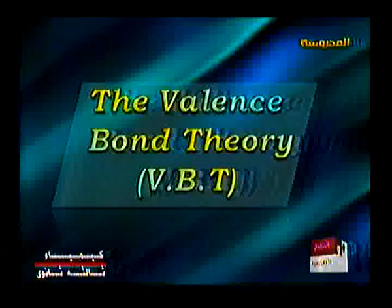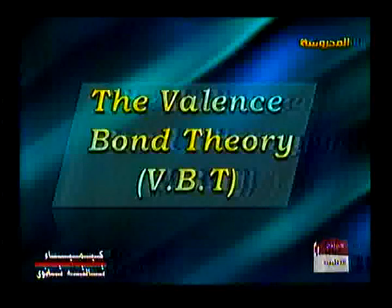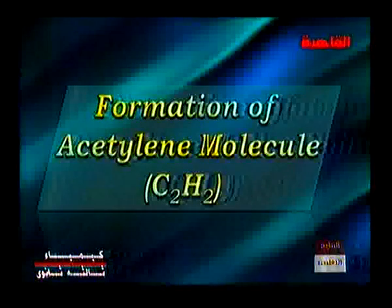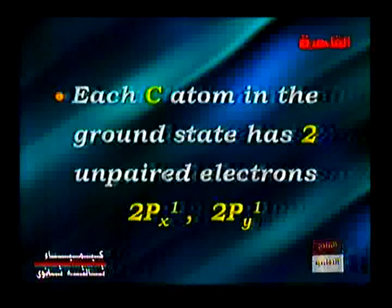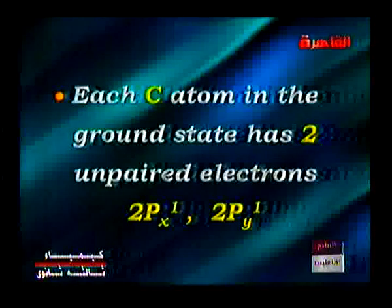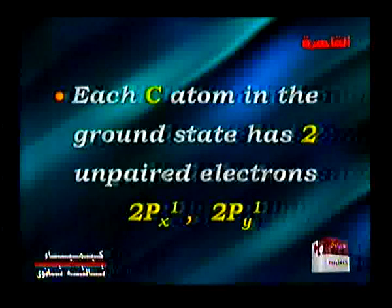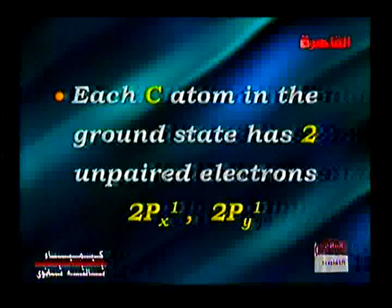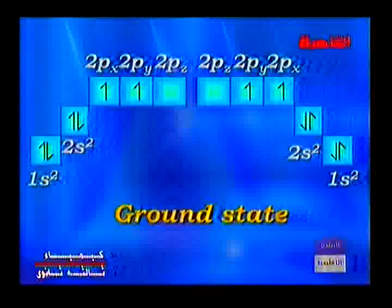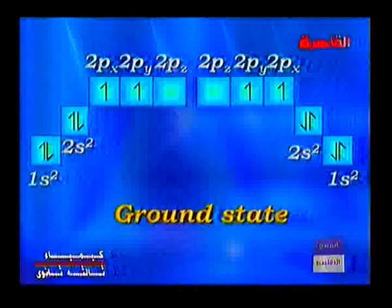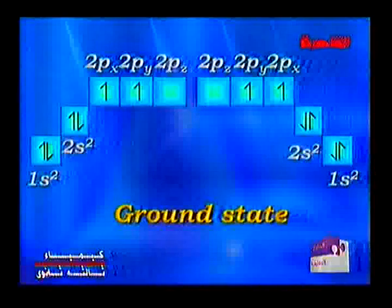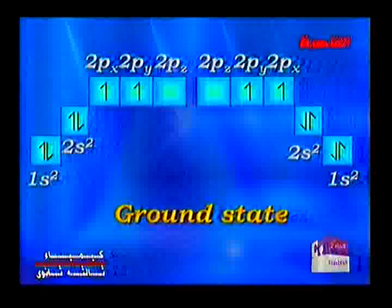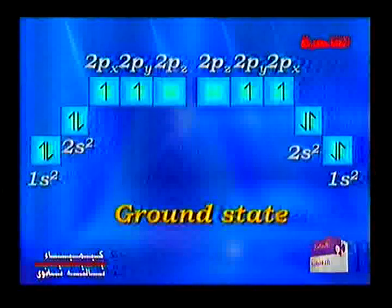The valence bond theory: the formation of acetylene molecule C2H2. Each carbon atom in the ground state has two unpaired electrons, which are 2px1 and 2py1. As the screen shows now, the carbon atoms in the ground state have electronic configuration 1s2, 2s2, 2px1, 2py1.